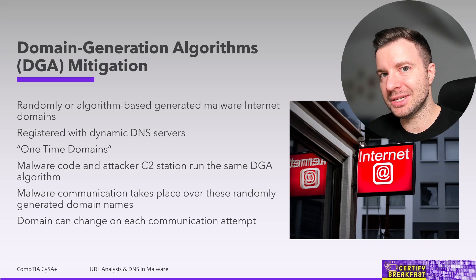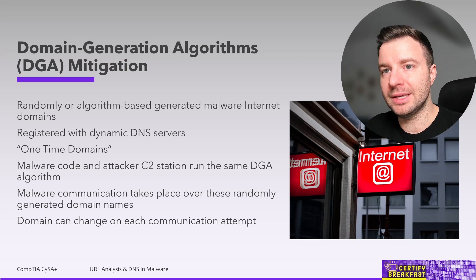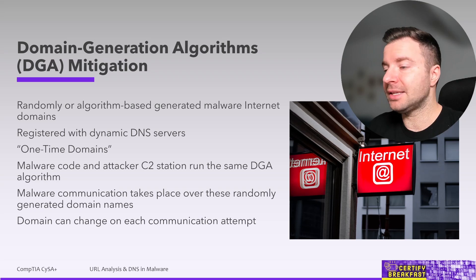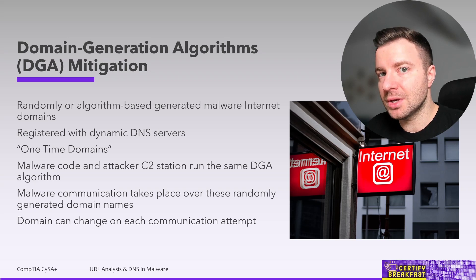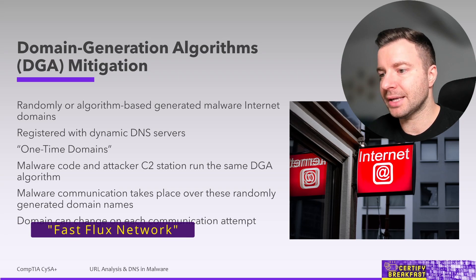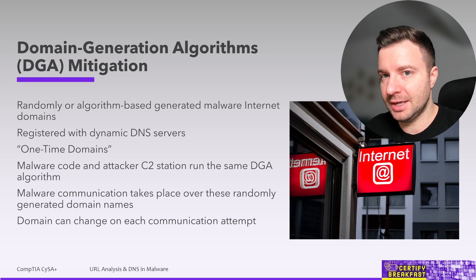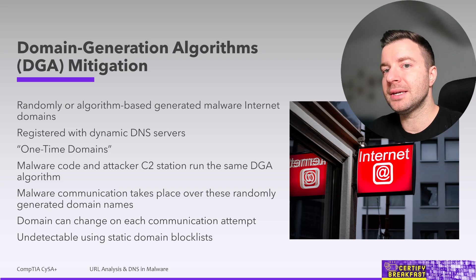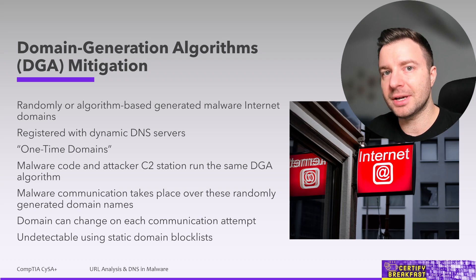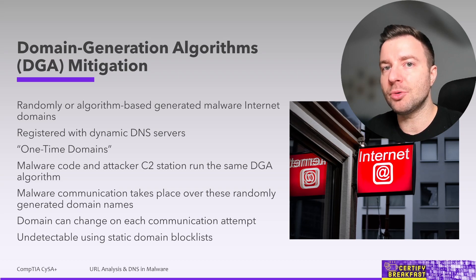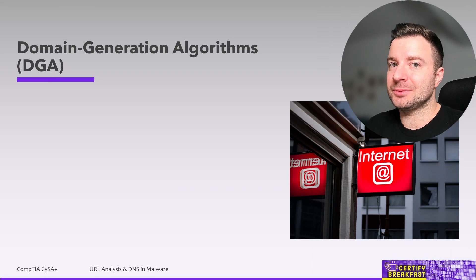When the malware needs to communicate with the command and control center, it can use the currently generated list of domains — which matches the list on the C&C server — making each communication attempt use a different web address. This can even be combined with a continuous change of IP addresses if multiple IPs or dynamic DNS services were contracted by the attacker. This is sometimes called a fast flux network, and the entire purpose is to become extremely difficult — effectively impossible — to detect and block using static IP or domain blacklists.